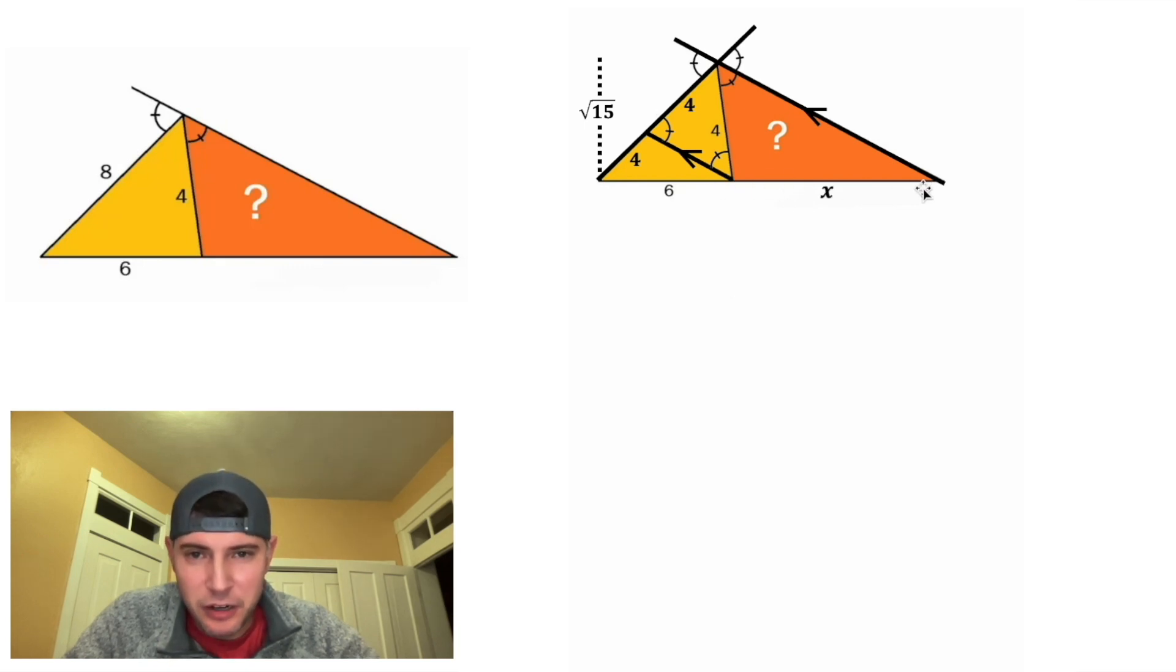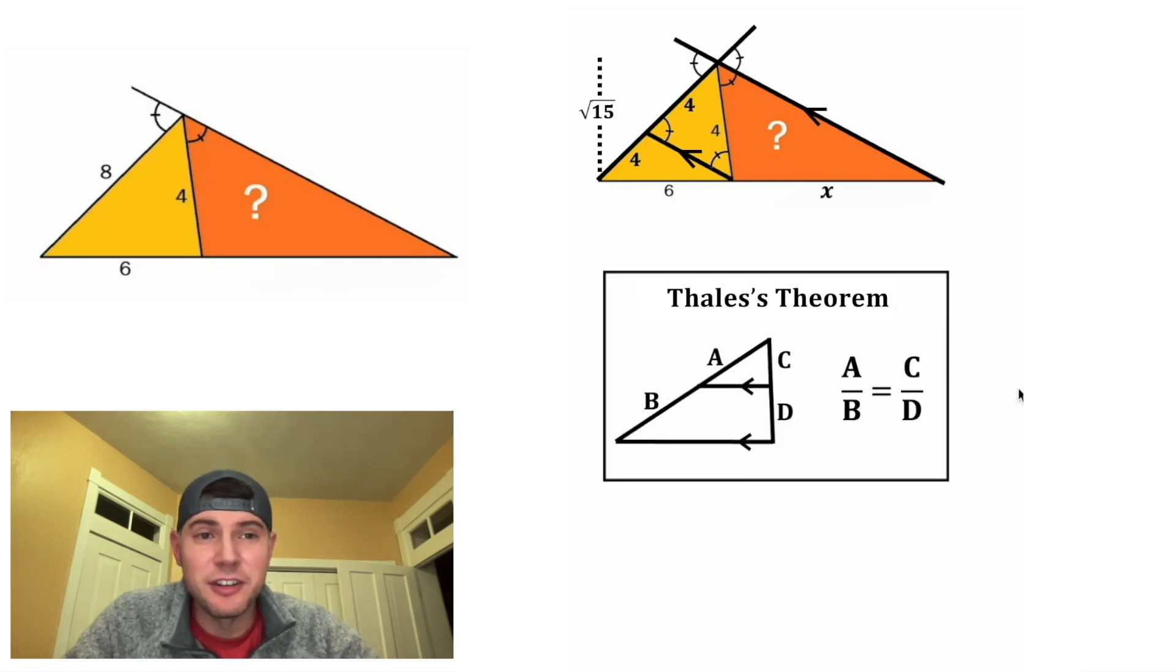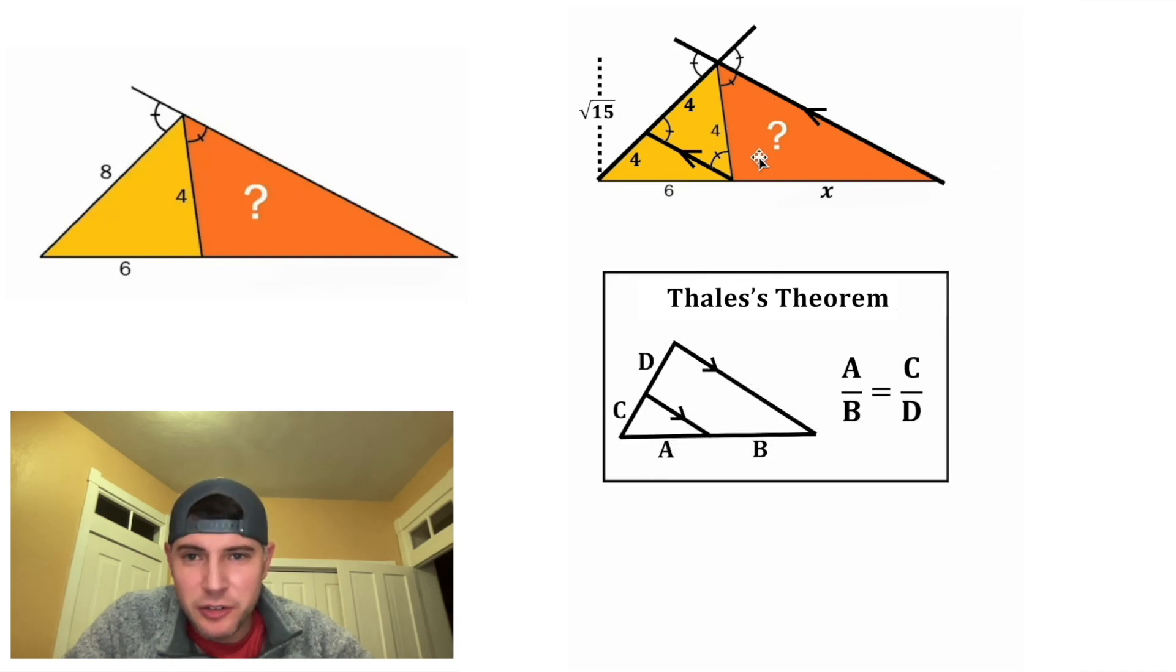Let's label the base of our orange triangle X. And now we can use Thales' theorem. It says if you have a triangle and a line cutting through that triangle parallel to the base, this ratio will be true. And if we put this on its side, it'll have the exact orientation of our triangle here. And we can set up our proportion.